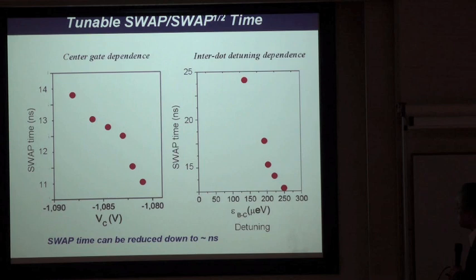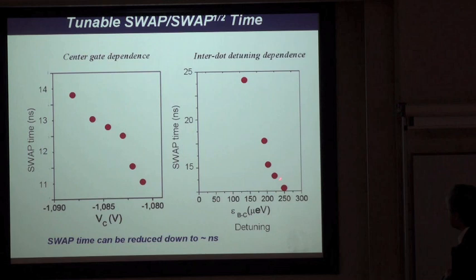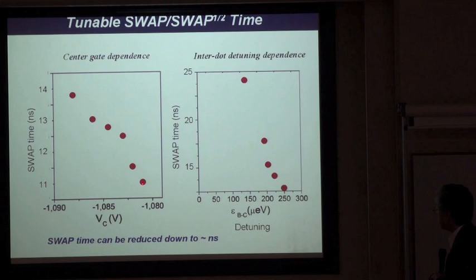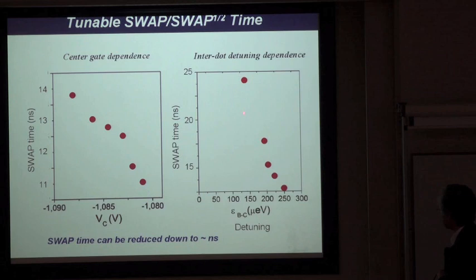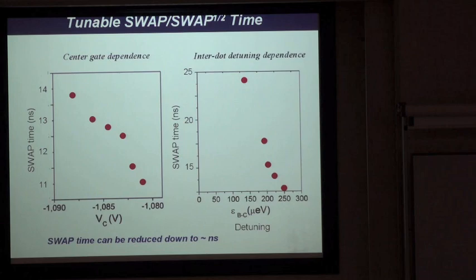Here is a plot of the SWAP time obtained in the experiment as a function of the center gate voltage, which tunes the tunnel coupling between the two dots, and also as a function of the detuning. In both cases, the SWAP time ranges between 10 and 25 nanoseconds. The tuning of detuning is very efficient, and we expect the SWAP time can be reduced down to nanoseconds in principle.